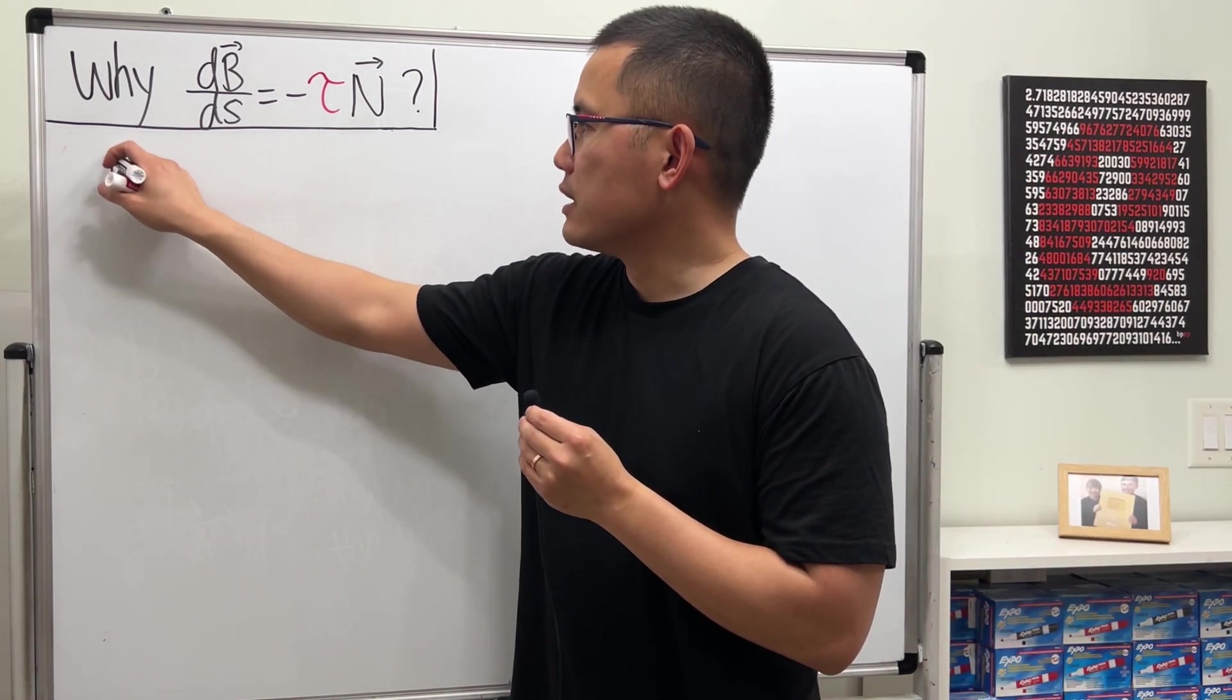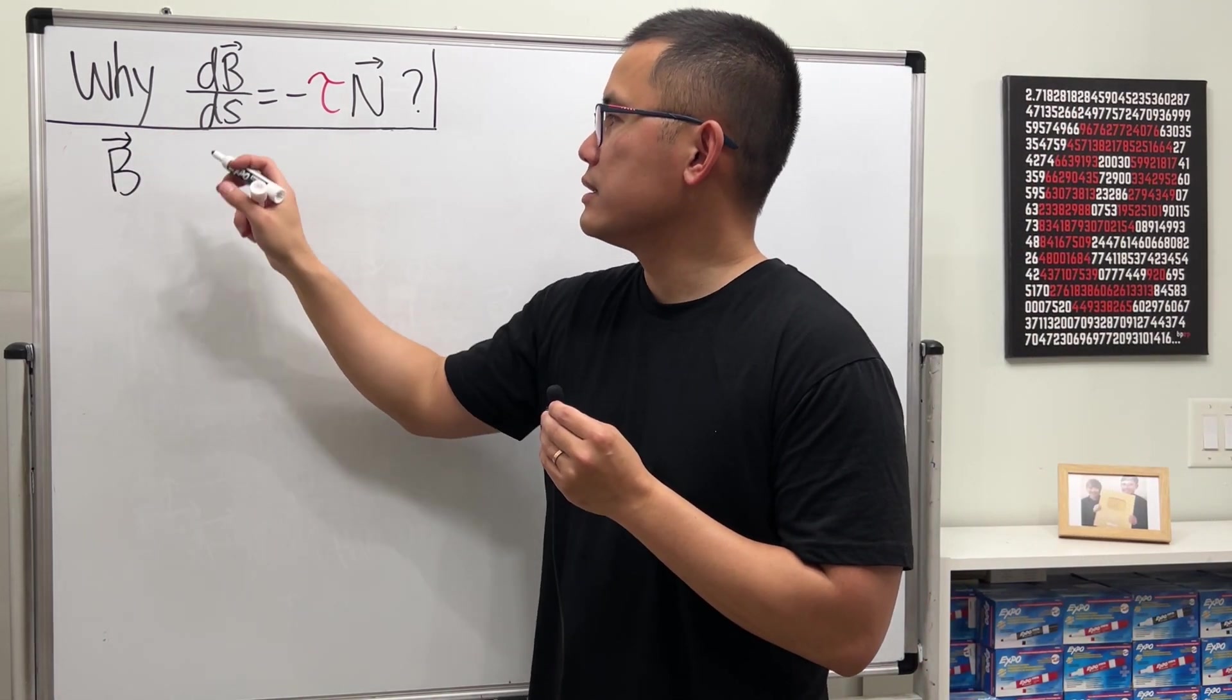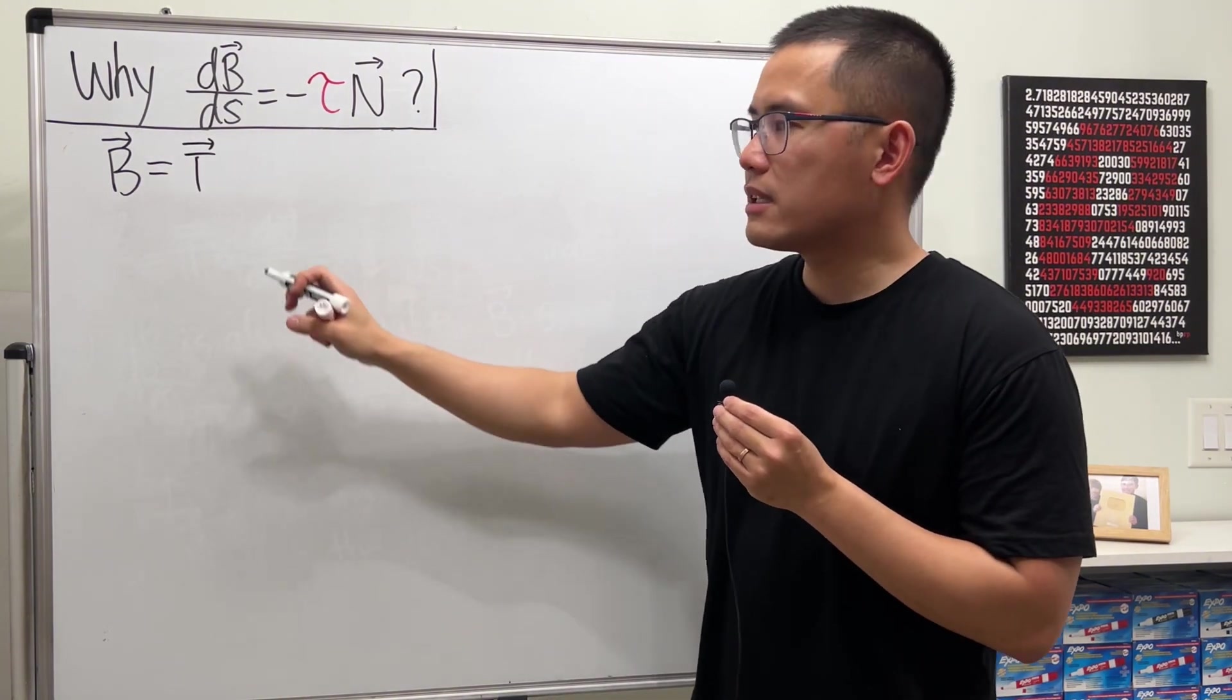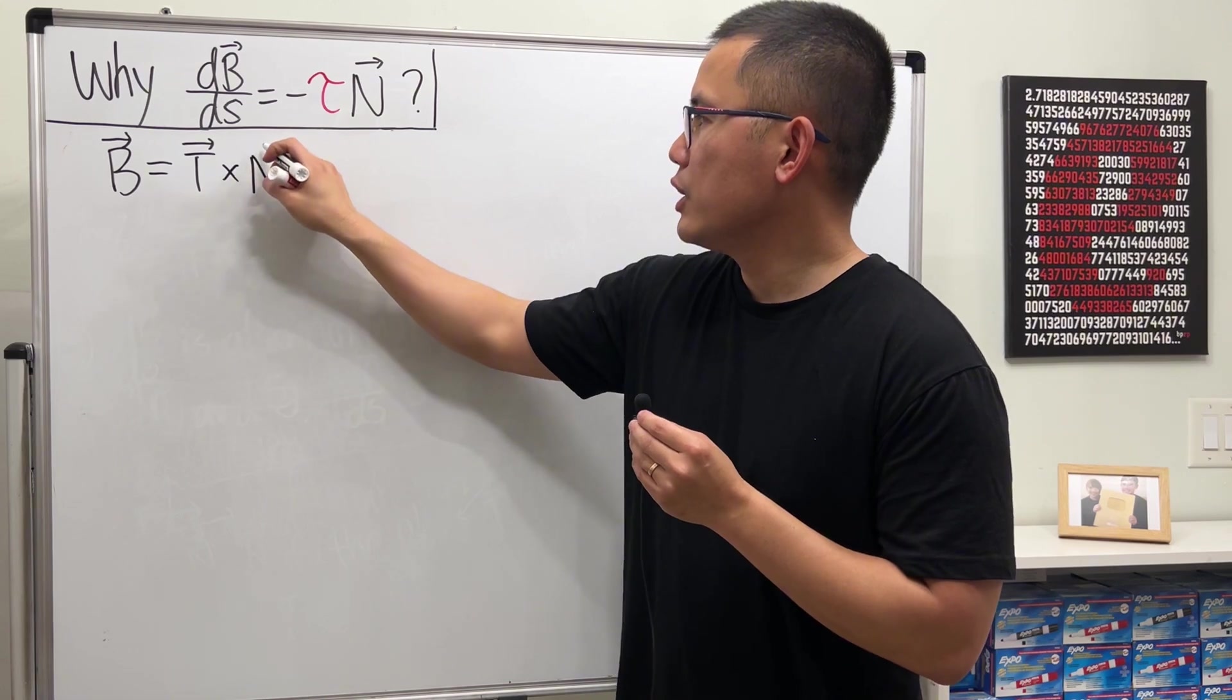We are going to first start with the definition of B, the unit binormal vector. And that's equal to the cross product of T, the unit tangent vector, and the unit normal vector n.